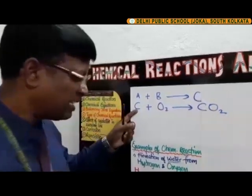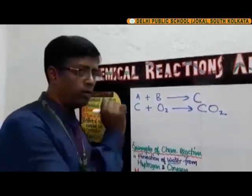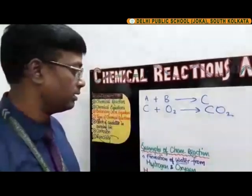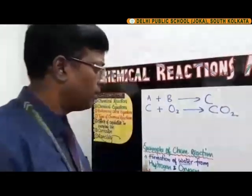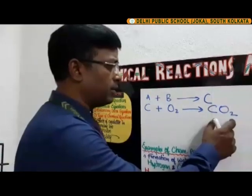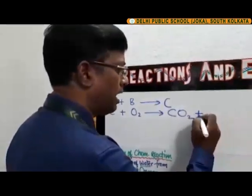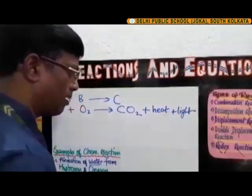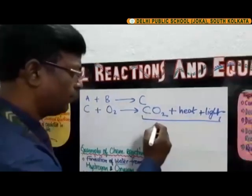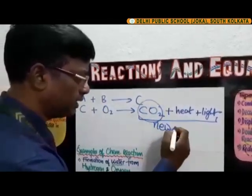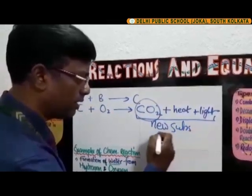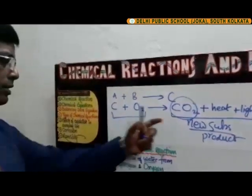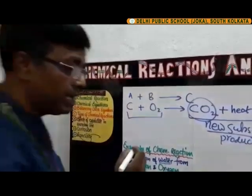In detail: we are burning coal, and coal has carbon as its major component. When carbon burns in the presence of oxygen present in the air, it gives a huge amount of CO2 gas along with a large amount of heat energy and light energy. Carbon dioxide is the new substance — the product — formed here. The substances on the left-hand side of the arrow are called reactants. Here there are two reactants: carbon and oxygen.